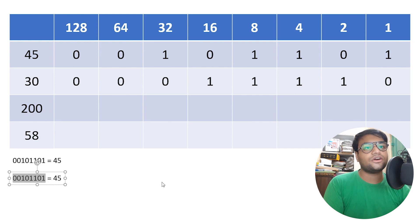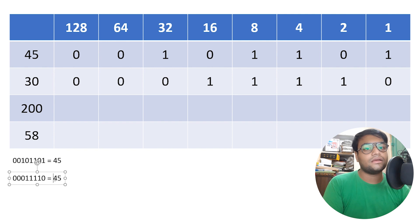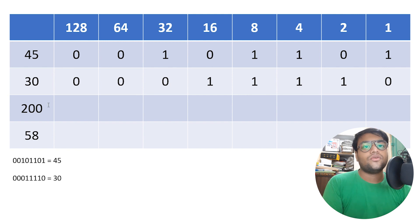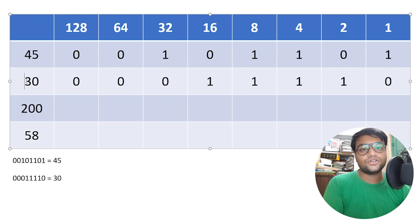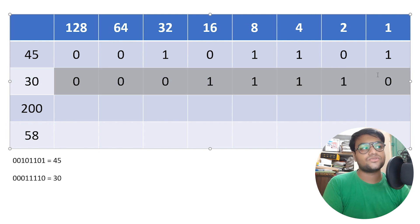The binary equivalent of the decimal number 30 is 00011110. We have successfully converted 30 to its binary number.